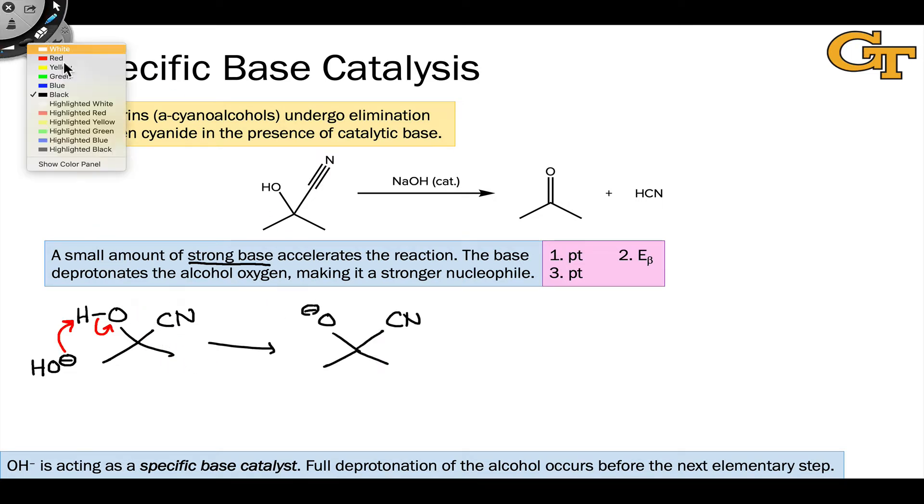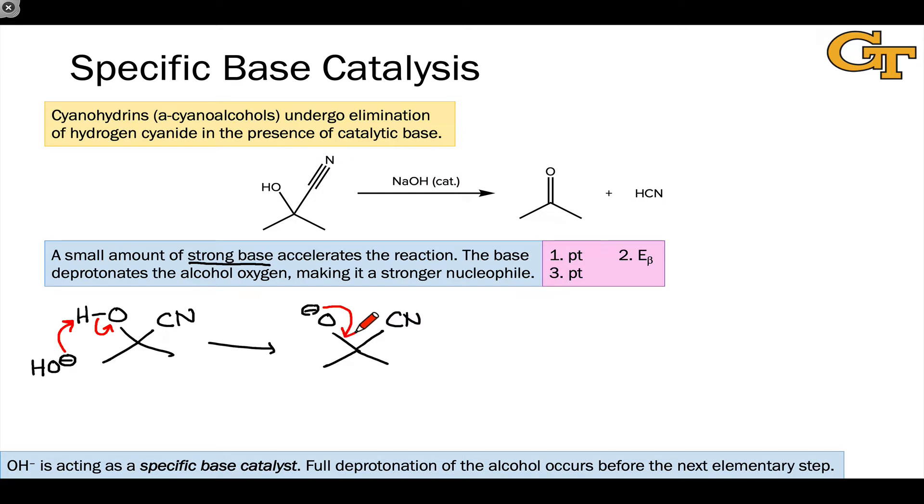The deprotonation generates an anionic intermediate, and now beta elimination is much easier, since we have a much stronger electron source in the anionic oxygen, and we've avoided charge separation. Now we're just dealing with charge transfer from an anionic oxygen to what will become an anionic carbon. This beta elimination is the business step of this reaction mechanism.